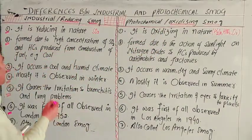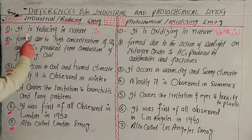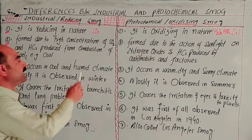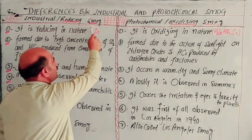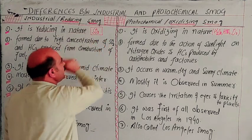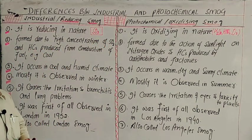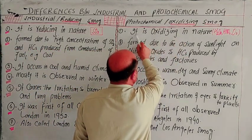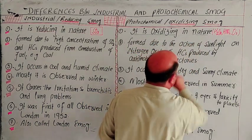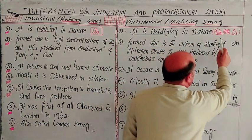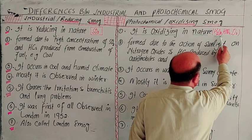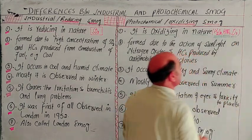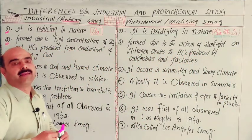Difference number one: industrial smoke is reducing in nature. The nature is reducing mainly because sulfur dioxide is reducing in nature. On the other hand, photochemical smoke is oxidizing in nature, because during its formation, hydrogen peroxide, HNO3, and ozone are formed — and all these are oxidizing in nature.